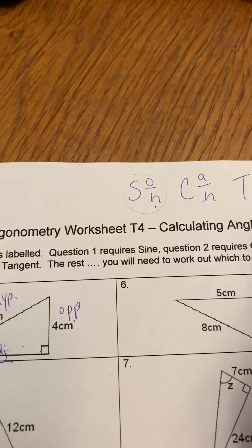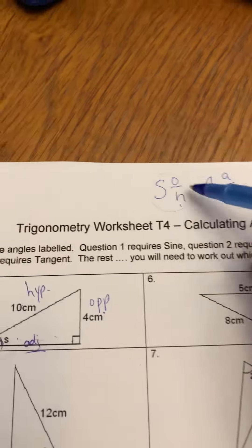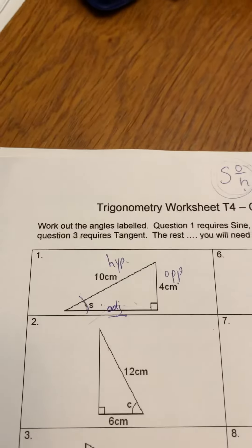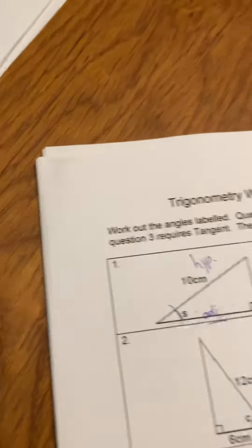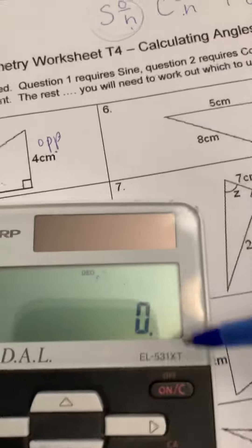So we go back to our SOHCAHTOA, and what we use is opposite and hypotenuse: the sine. So the way the math you work out here, and I just want to point out again that we'd always be setting our calculator on degrees.